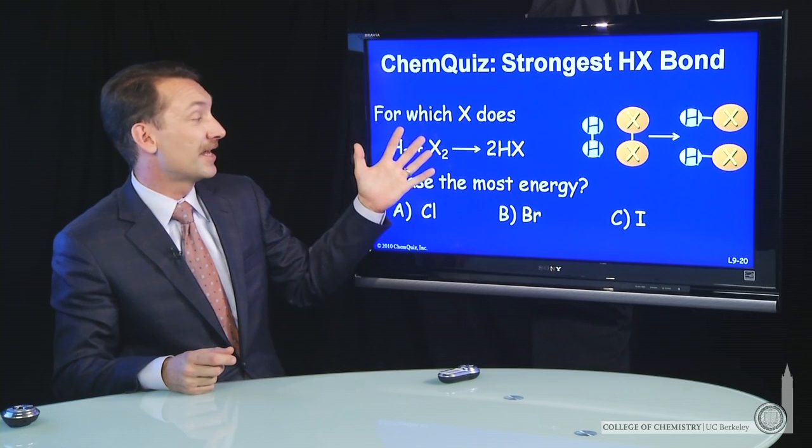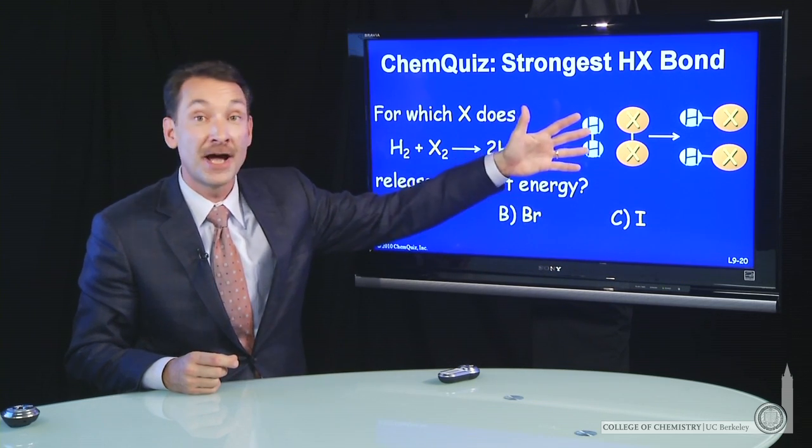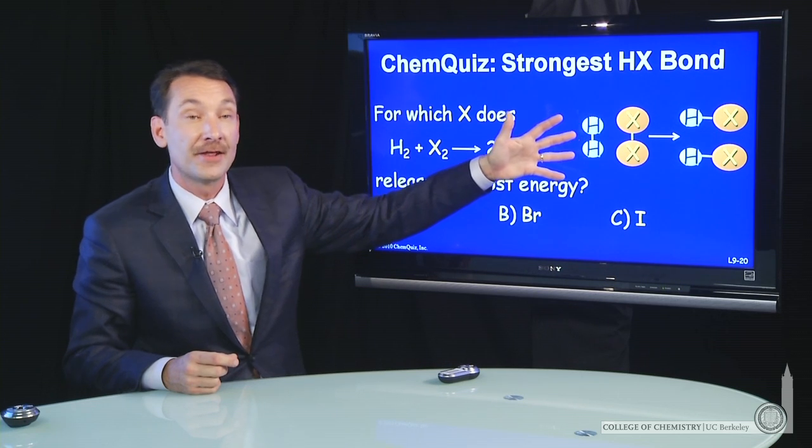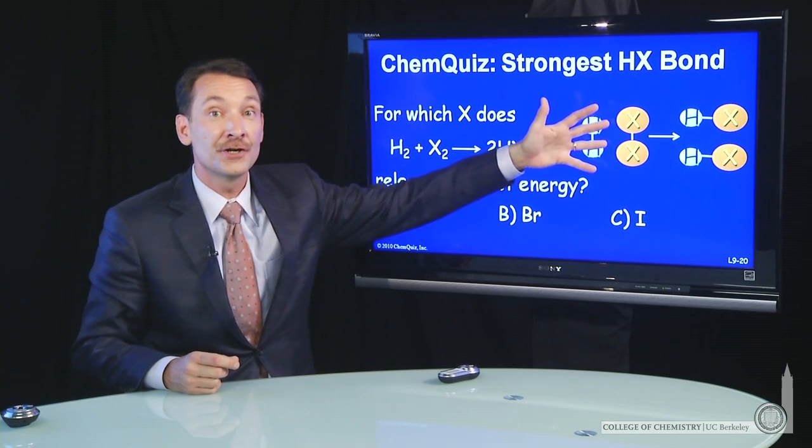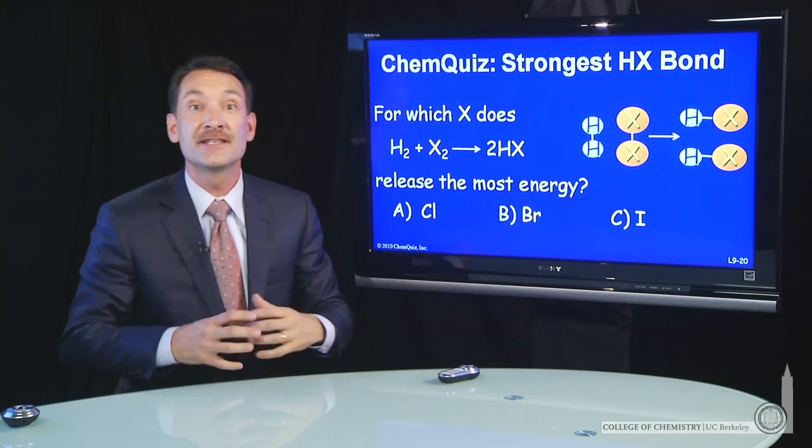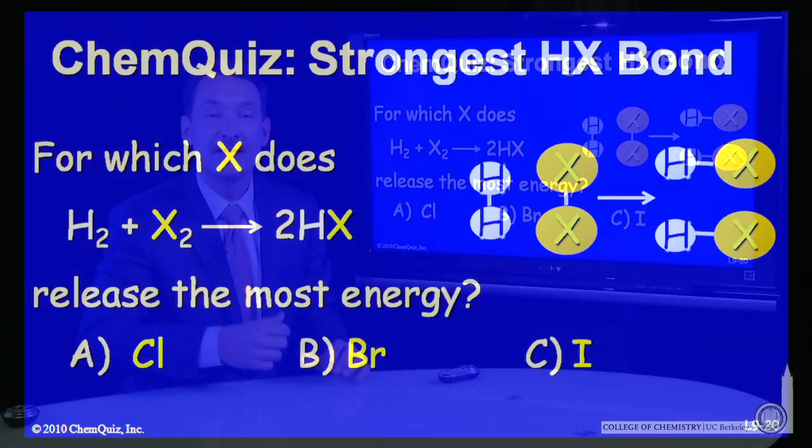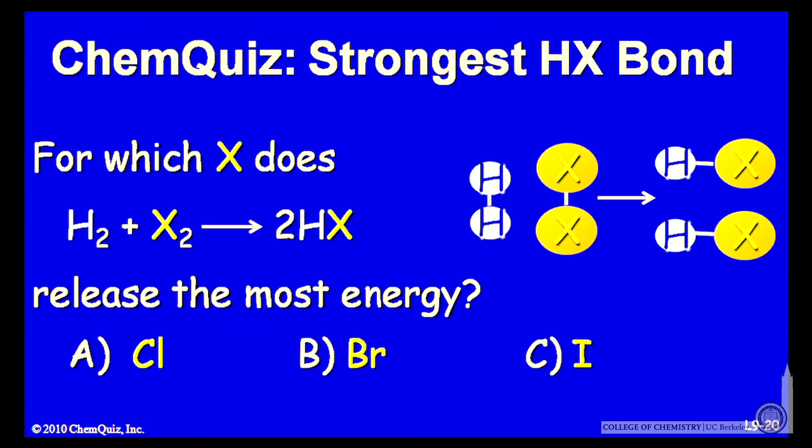Here's an example where I'm taking chlorine, bromine, or iodine and reacting it with hydrogen gas. The question is, when that reaction occurs and forms the hydrogen halide, which releases the most energy? Which forms the strongest bond? Think about that and make a selection.